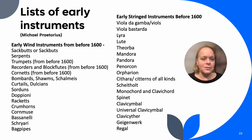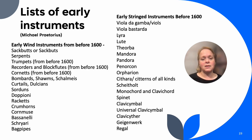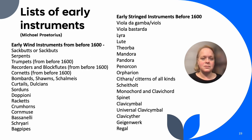Here is a list of early instruments that Praetorius discussed in his encyclopedia: the sackbutt — an early version of the trombone — serpents, cornets, bombards, shawms, sordons, rackets, crumhorns, bagpipes, orpharion, pandoras, lutes, liras, viola da gambas, regals, spinet, monochord, and clavichord. There are all sorts of interesting instruments to choose from.